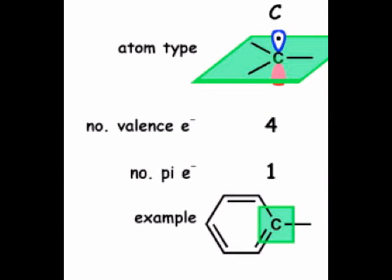This first image depicts a neutral sp2 hybridized carbon connected to three other atoms. Notice that one valence electron of this carbon is in the 2pz orbital contributing to the aromatic pi system. Generally, we see carbons of this type involved in double bonds, as in benzene.